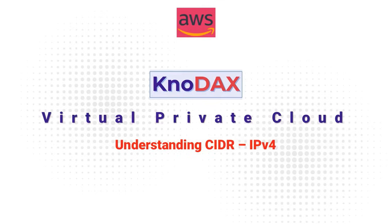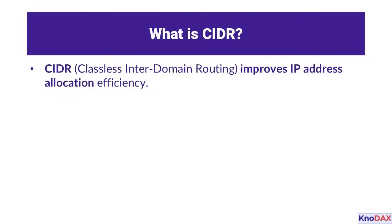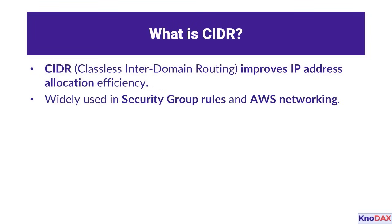Welcome to the video on an overview of classless inter-domain routing, CIDR, and its essential key concepts. CIDR is a method used to improve IP address allocation efficiency by creating flexible address ranges. It is widely employed in AWS networking and security configurations, such as security group rules, to define which IPs can access specific resources.